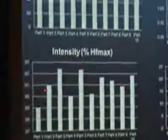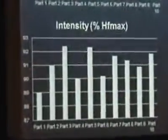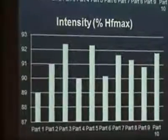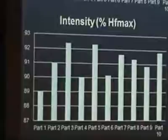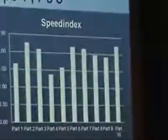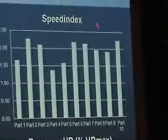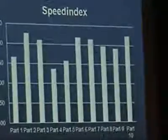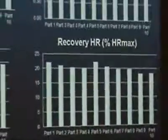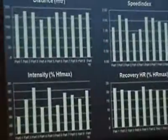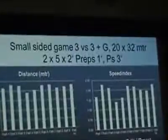Here you see the intensity of the training session — it's around 90 to 92 percent, which was our objective so that's fine. Here you see the speed index, which is a combination of time in different speed zones, and over time we don't see any change or decrease. The recovery heart rate is about 20 percent of maximum heart rate. So in this training session we get information that the intensity is okay, and knowing from earlier sessions how they perform, we can make a decision to go to 11 or 12 repetitions, or maybe extend to two and a half minutes.